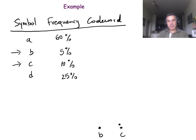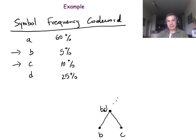Given that the tree has to be binary and full, these two will be siblings. They will both have the same parent, some internal node of the binary tree. Now we don't know what is at the higher levels of this tree at this point yet. But what we can do is essentially think of this internal node as a new symbol that represents both B and C. And the frequency of that symbol will be the sum of the frequencies of B and C — in other words, 5 plus 10. This new symbol will be in the alphabet 15% of the time.